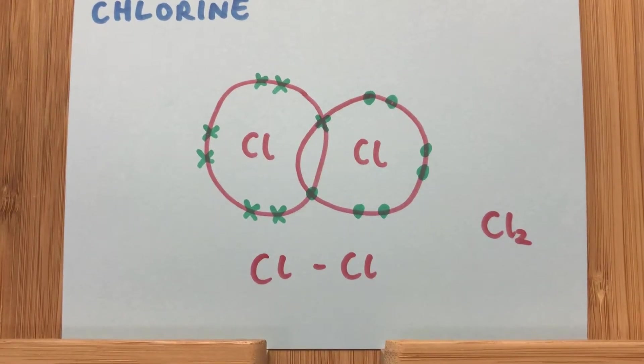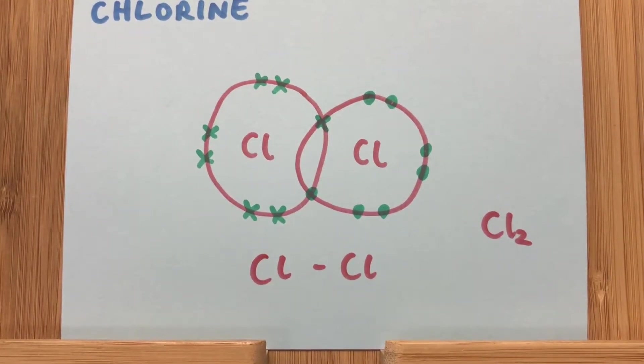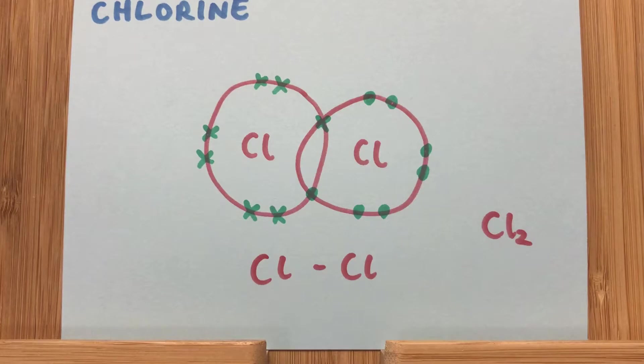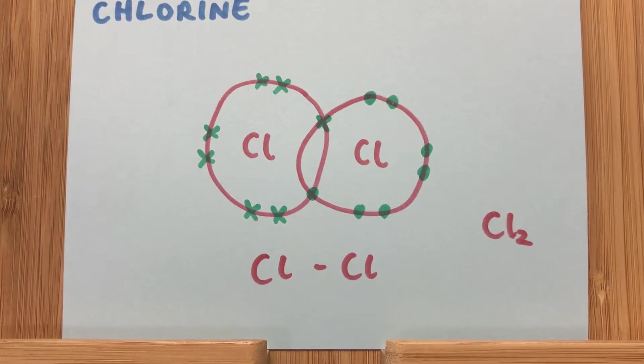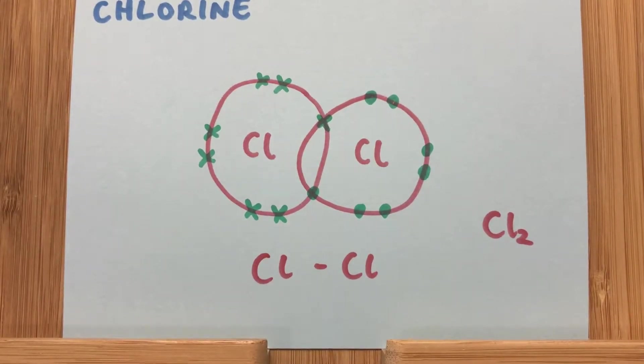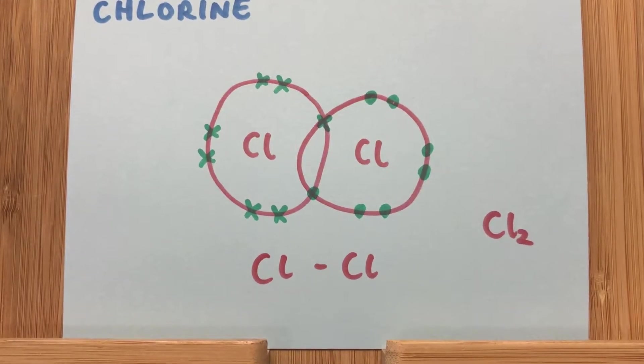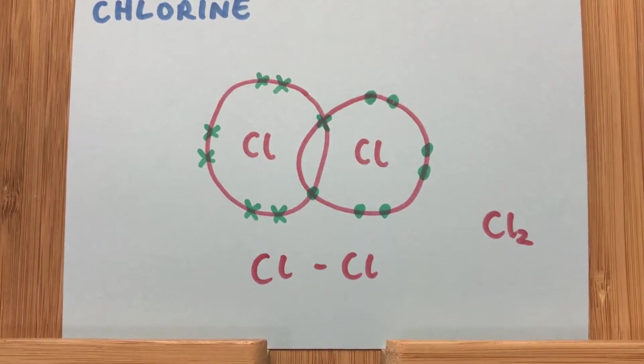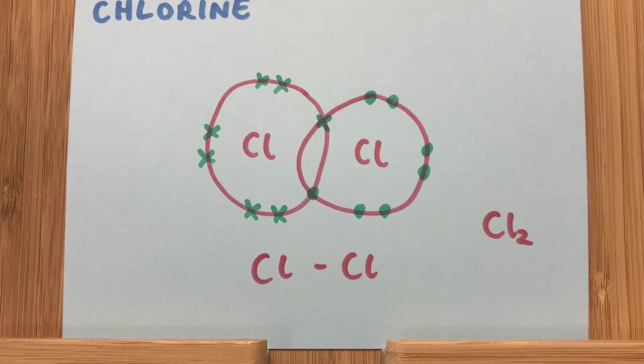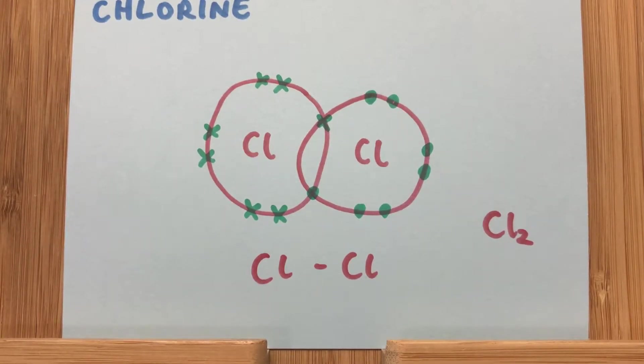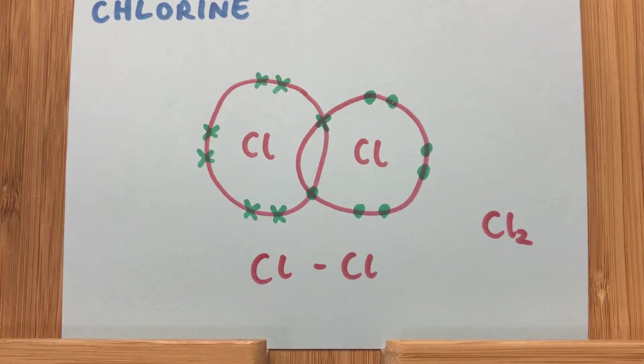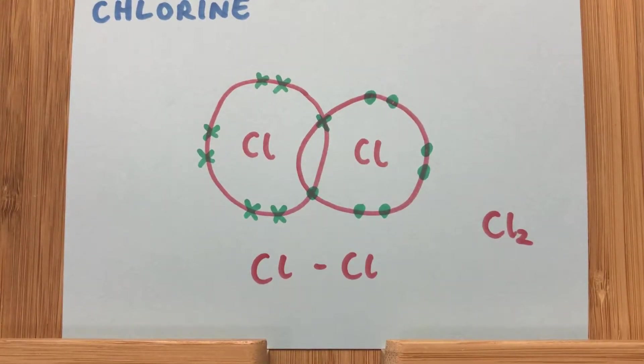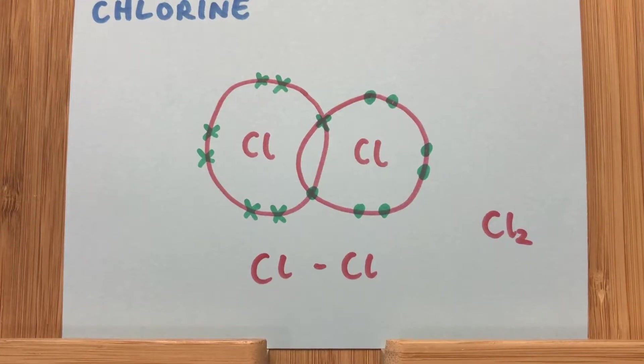Now, chlorine is in group seven. So seven electrons in the outer shell. If we look at the atom on the left, we've got the seven electrons represented as seven crosses for chlorine. And then the atom on the right, we have seven dots representing the seven electrons in the outer shell of that atom. And then we can see where they've crossed over or where the two shells meet. There's a sharing of one cross, one dot, both electrons. And that is represented again as a single bond in the stick diagram. And that's Cl2.